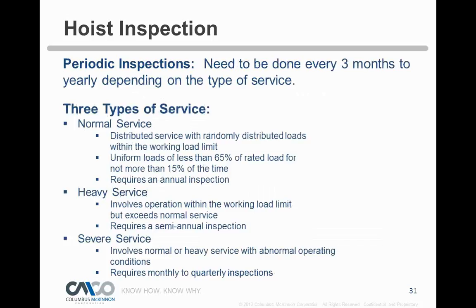For periodic inspections, frequency depends on severity of service. Normal service — loads randomly distributed within the working load limit, uniform loads less than 65% of rated load for no more than 15% of a work shift — requires annual inspection. Heavy service exceeding that definition requires semi-annual inspection. Abnormal operating conditions such as high heat, outdoor use, chemical or oceanic environments are deemed severe service requiring quarterly inspection with full documentation.